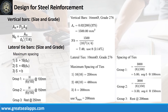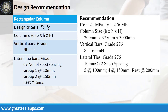Follow the given computations for lateral ties. Design recommendation: fc' equals 21 MPa, fy equals 276 MPa. Column size: 200 mm by 375 mm by 3,000 mm. Vertical bars of grade 276: 8 pieces, 16 mm bar. Lateral ties of grade 276: 10 mm bar, 2 sets spacing — 5 at 100 millimeters, 4 at 150 millimeters, rest at 200 millimeters.